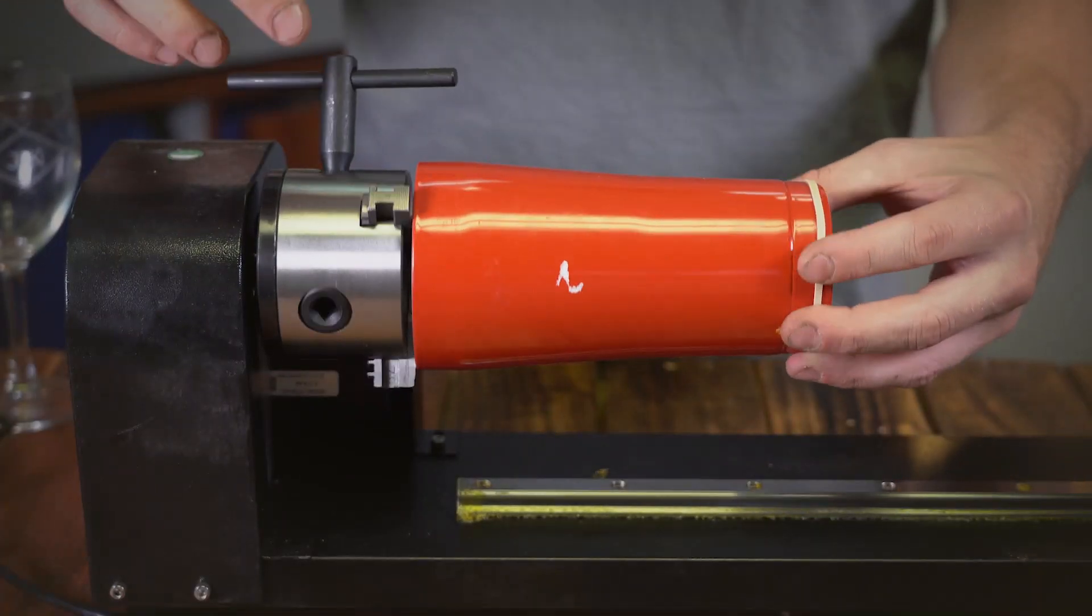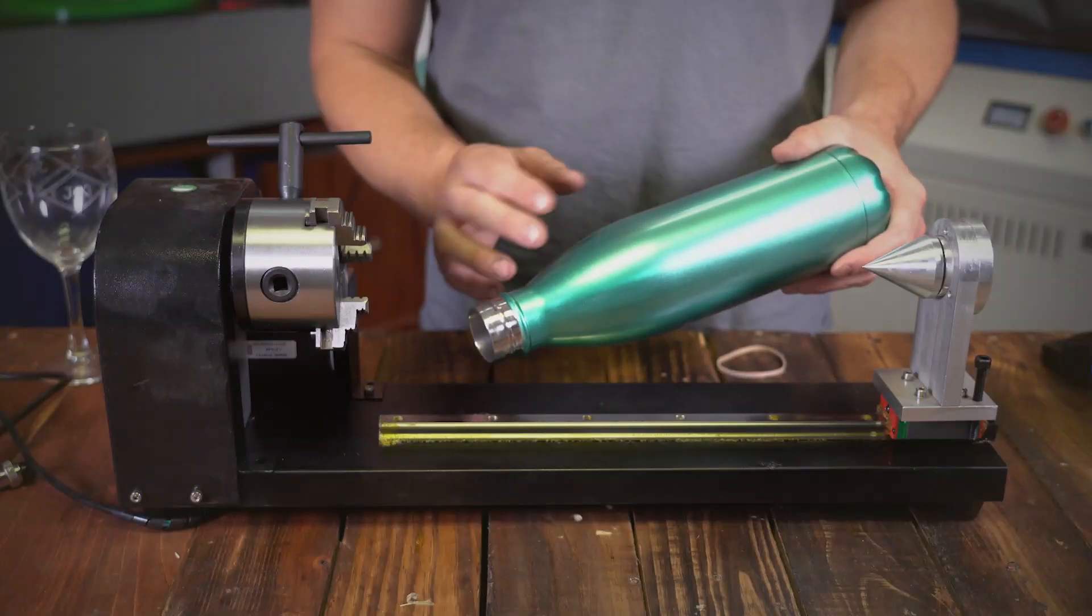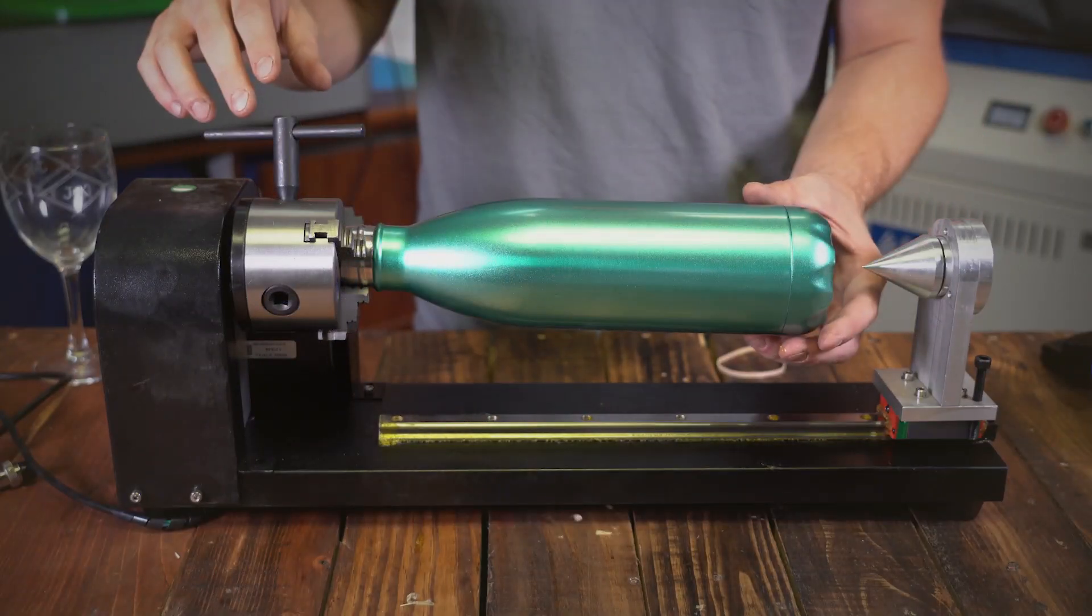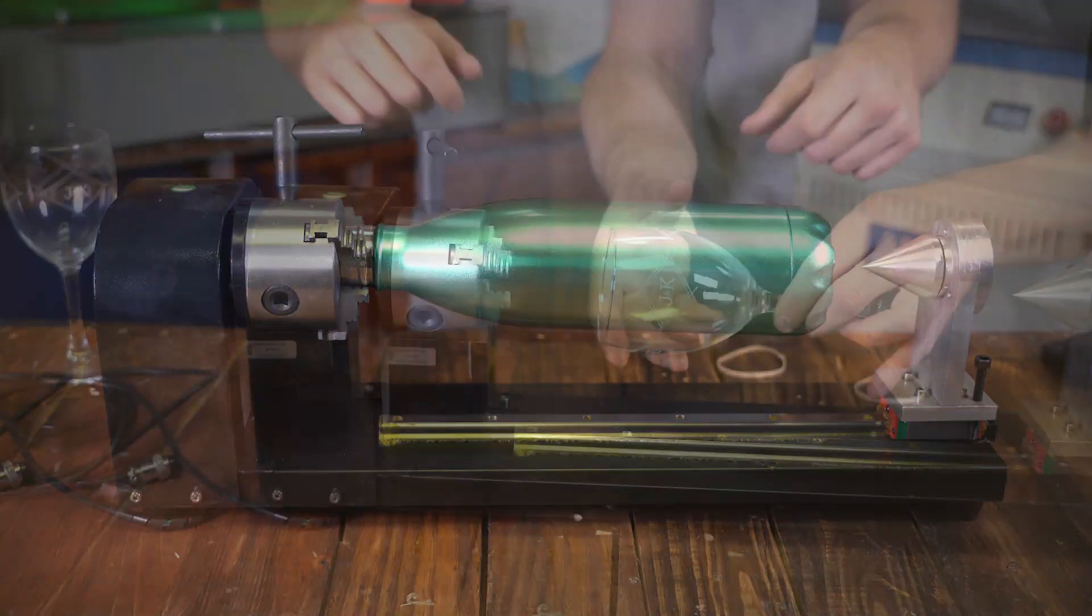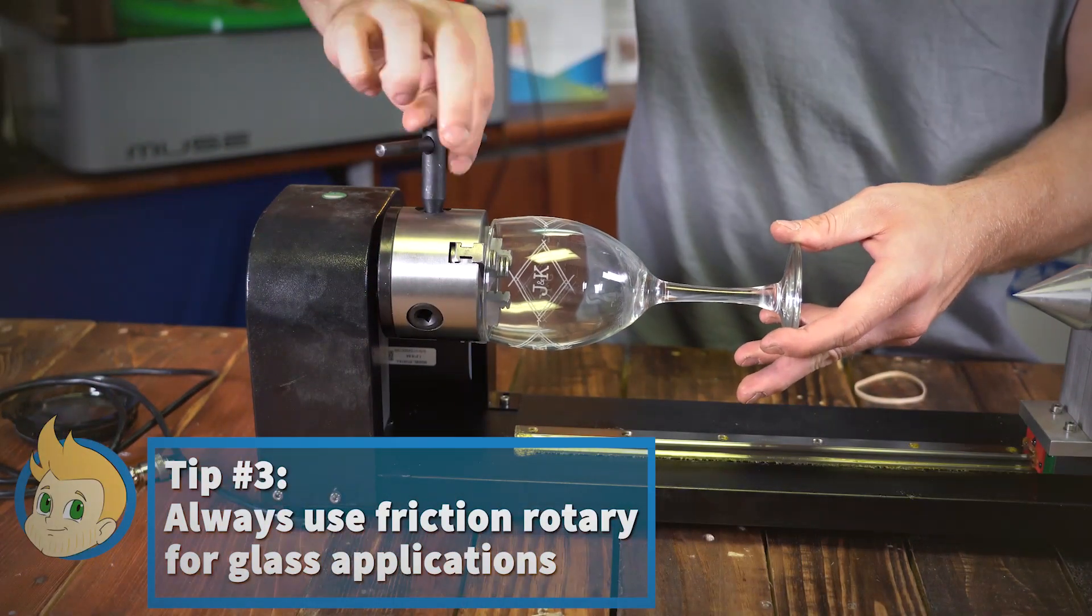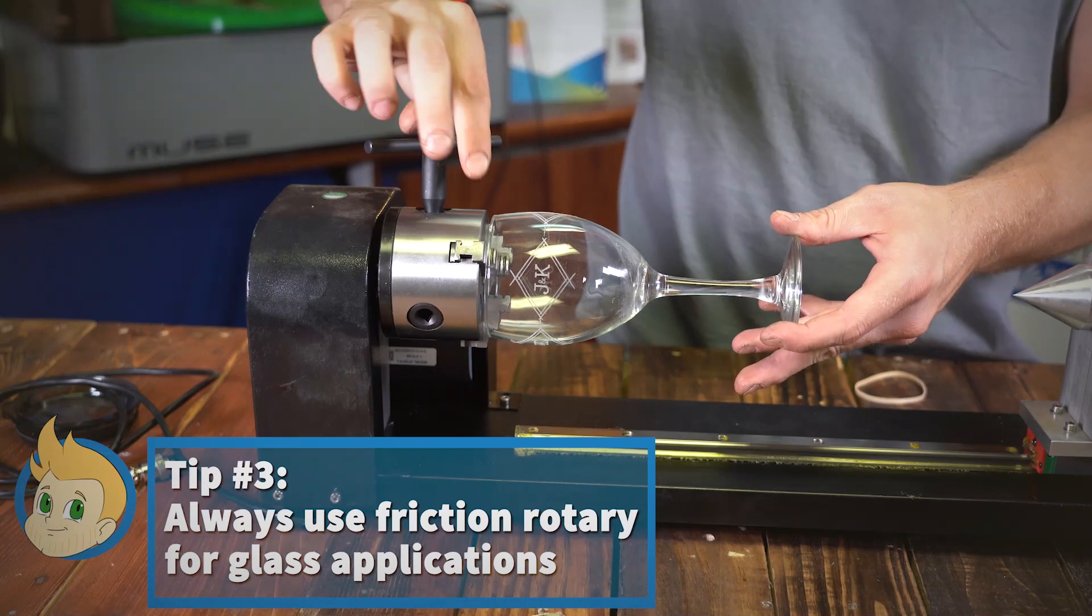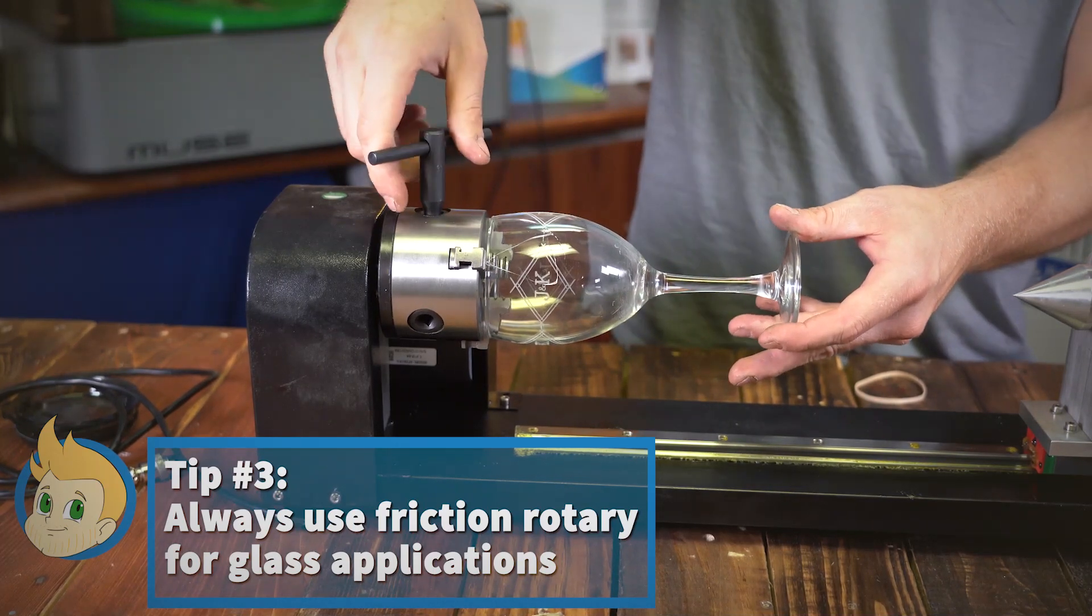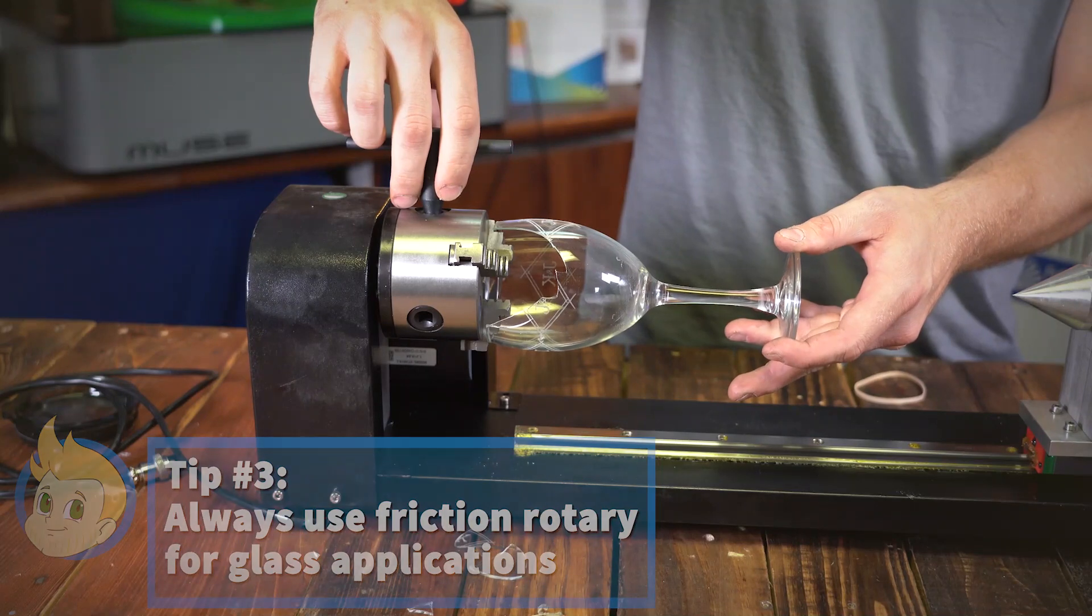You can go in or out depending on your application. If you're doing glass objects, you definitely do not want to use the chuck as it clamps in or on the actual object. It's going to break.